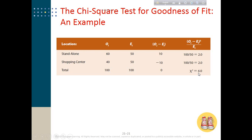Similar to the t-test, this chi-square statistic is compared with a critical value. If the chi-square statistic is higher than the critical value, we reject the null hypothesis. If it is less than the critical value, we accept the null hypothesis. Checking the chi-square table, we see that our chi-square statistic of 4 is actually higher than the critical value, so we reject the null hypothesis.